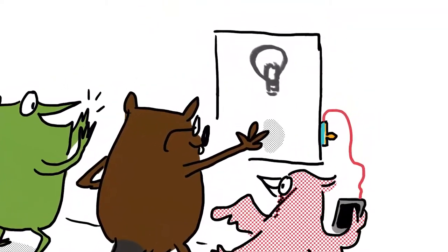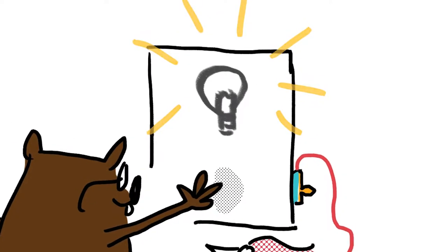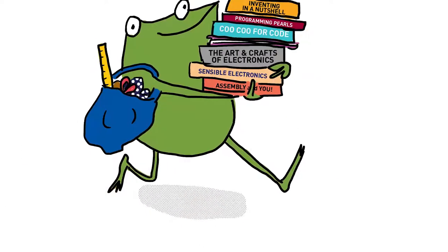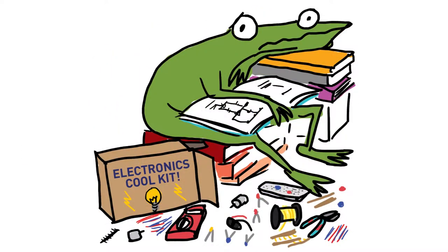One day, Fern sees her friends make these really awesome projects that light up and glow and do all sorts of things. And she wants to make things like that too. So she grabs all her stuff and then she runs happily along. But then she realizes this stuff is really hard and she gets really frustrated.